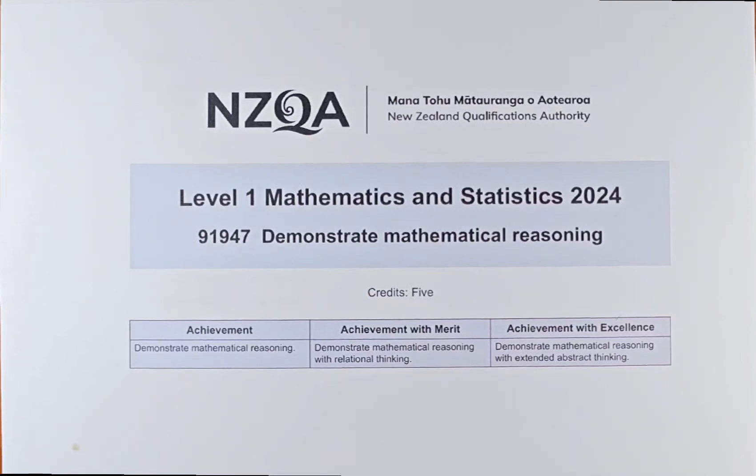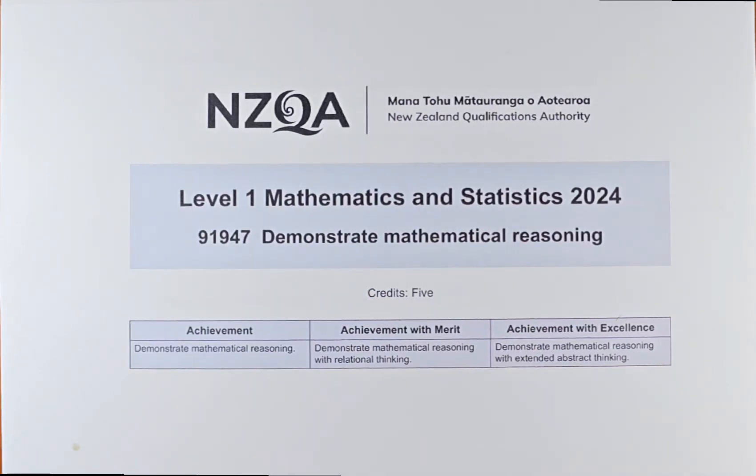Good day everyone, and in this video we are going to solve question 2a of the 2024 level 1 NCEA paper titled Demonstrate Mathematical Reasoning. This paper title number is 91947 and this is worth 5 credits.